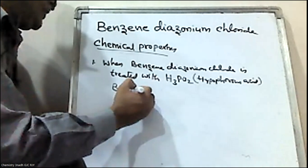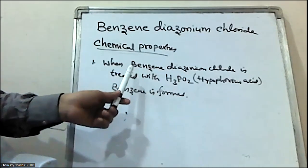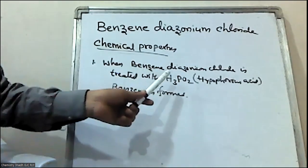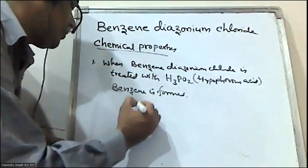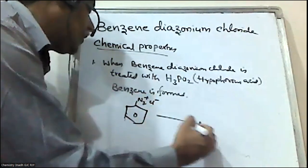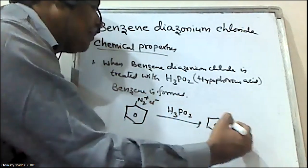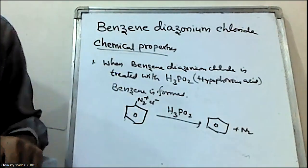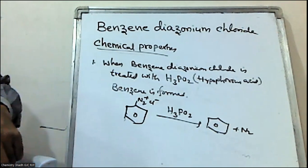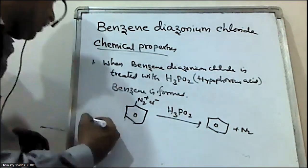On reaction with hypophosphorus acid, benzene is formed. So the reaction is: benzene diazonium chloride reacts with hypophosphorus acid to give benzene, along with N2, H3PO3, and HCl. This is the first reaction of benzene diazonium chloride — with hypophosphorus acid.